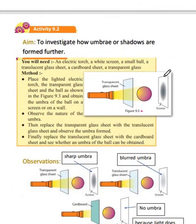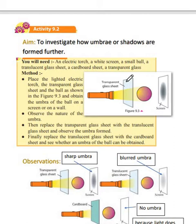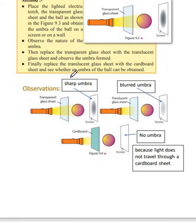Now let us move to Activity 9.2 where we study this in a more detailed manner. Here is the same practical, but we are going to use a torch and we are going to place a transparent glass sheet, an opaque sheet, and a translucent sheet between the torch and the ball. First, you take a torch, set up a screen behind, place the ball in front, and keep a small gap between the torch and the ball. You place a transparent glass sheet between them and get the observation.